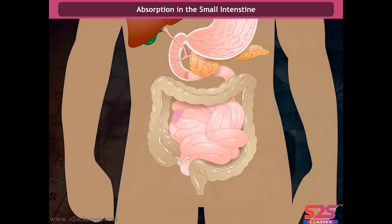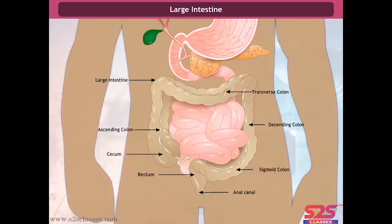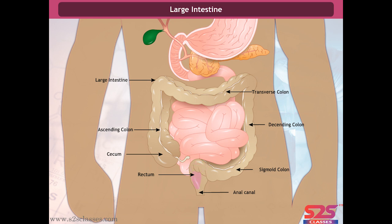The food that remains undigested and unabsorbed enters the large intestine, which is wider and shorter than the small intestine — about 1.5 metres in length. It absorbs water and remaining salts from the undigested material. The residual waste enters the rectum, stored as semi-solid feces, and is finally removed from the body through the anus in a process known as egestion.